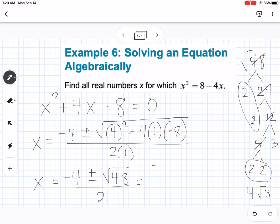So this would be negative 4 plus or minus 4 square root of 3 over 2. And then since they all are divisible by 2, we could simplify this into negative 2 plus or minus 2 square root of 3. So that would be our exact answer.